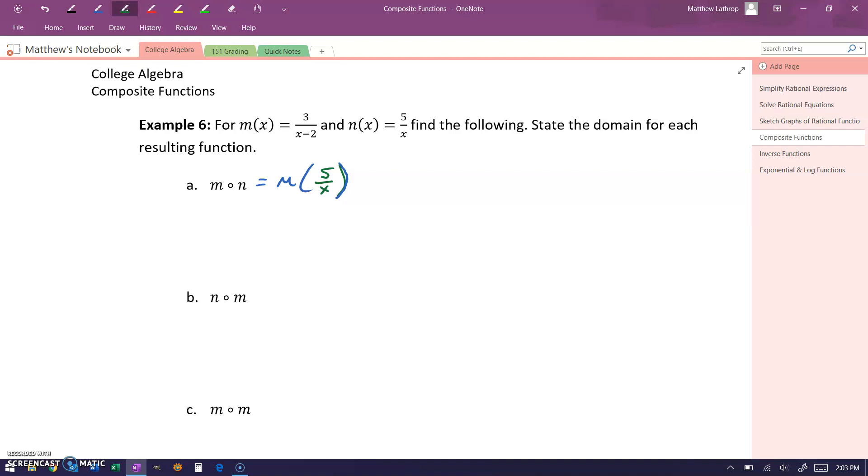This gives us our first point where we need to identify restricted values. Whatever our second function is, whichever function we're plugging into the first function, we need to check any restricted values. So this tells us that regardless of what our resulting function is, x cannot be equal to 0.